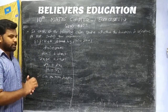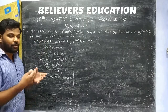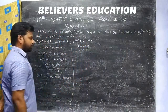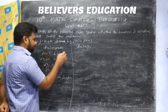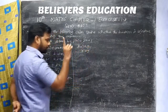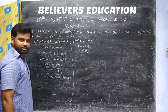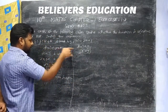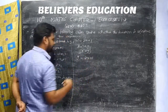Onto function — what do we do? We take f of x equals y. For the onto function, y is equal to 2x plus 1.